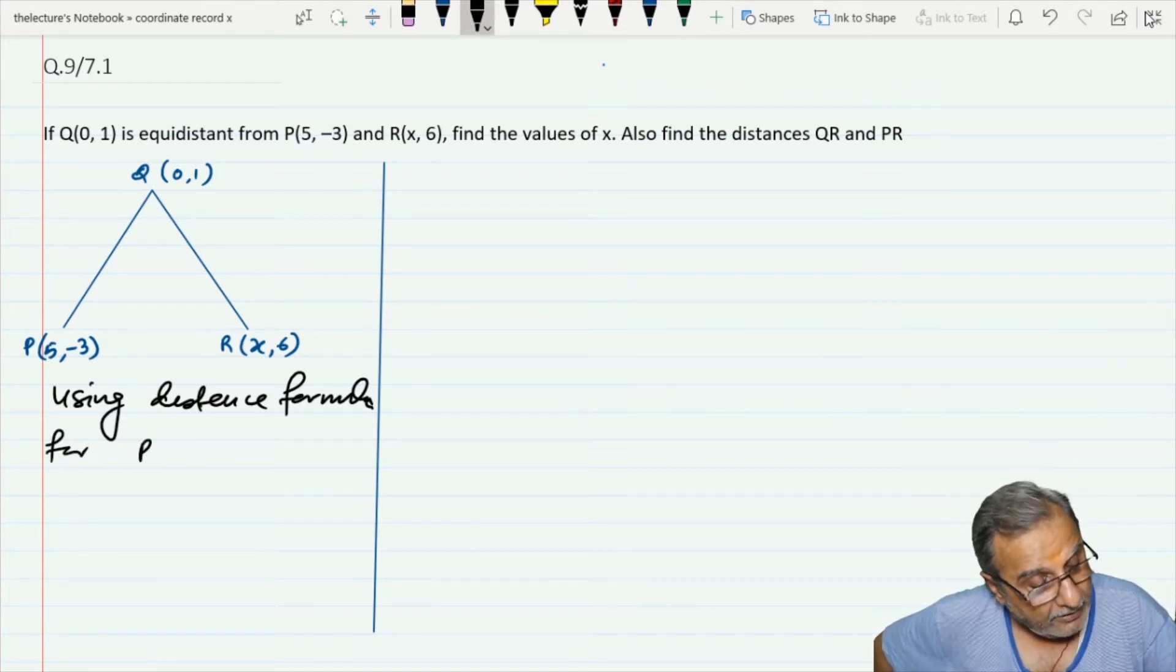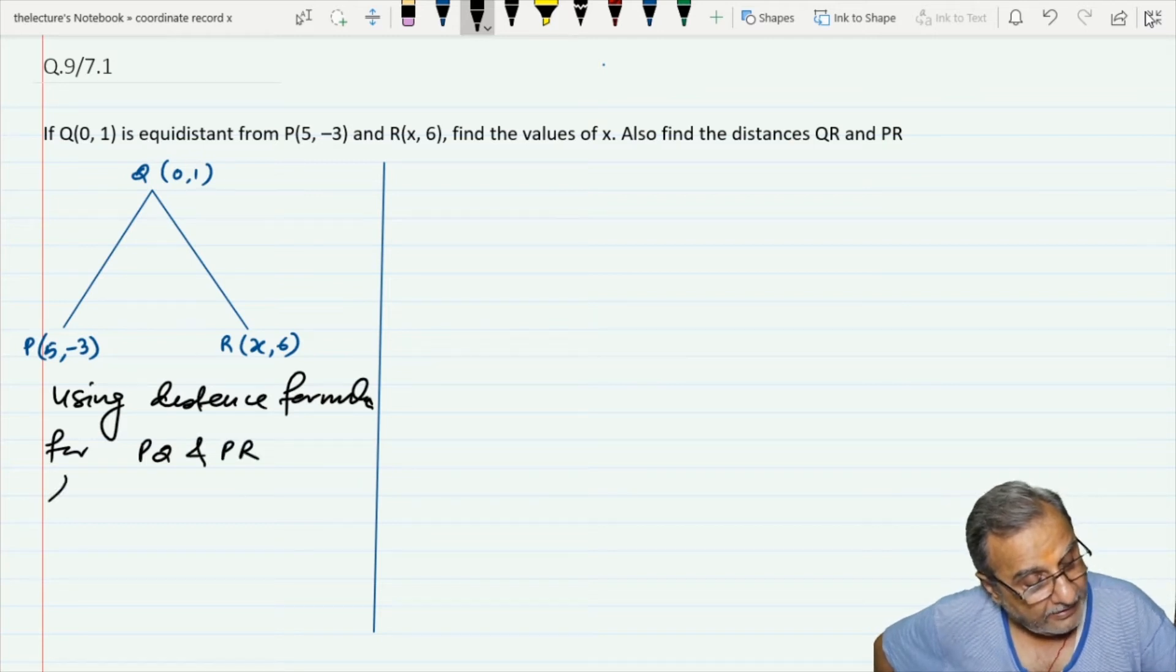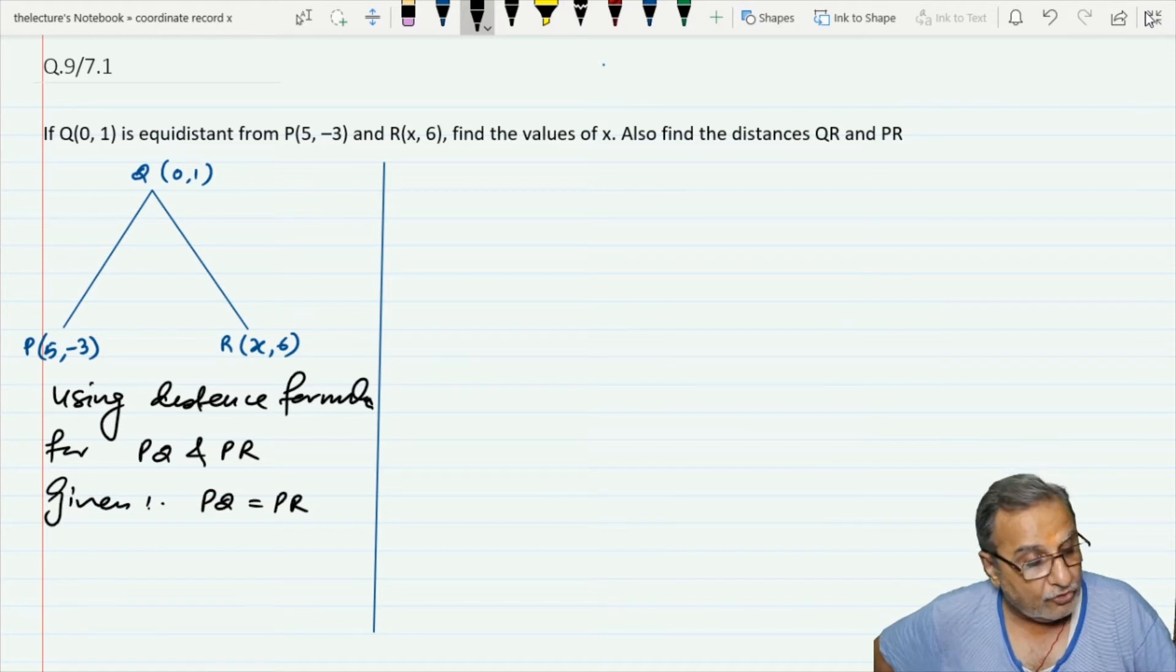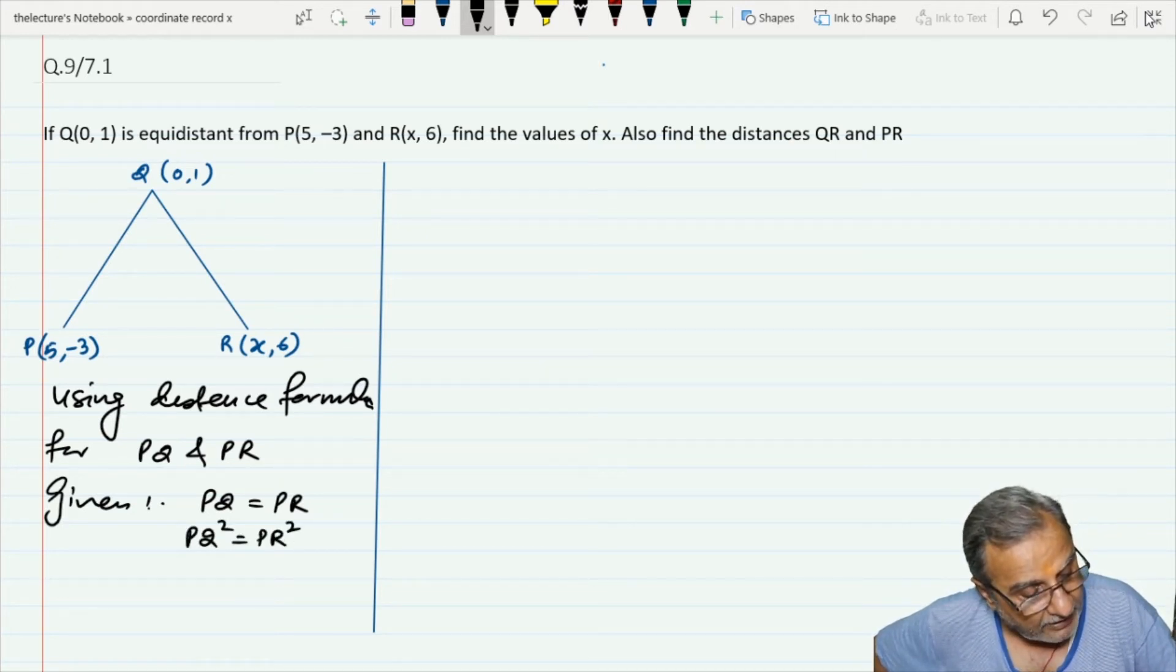For PQ and PR, given that PQ equals PR. If I square both of them, I get PQ² equals PR².